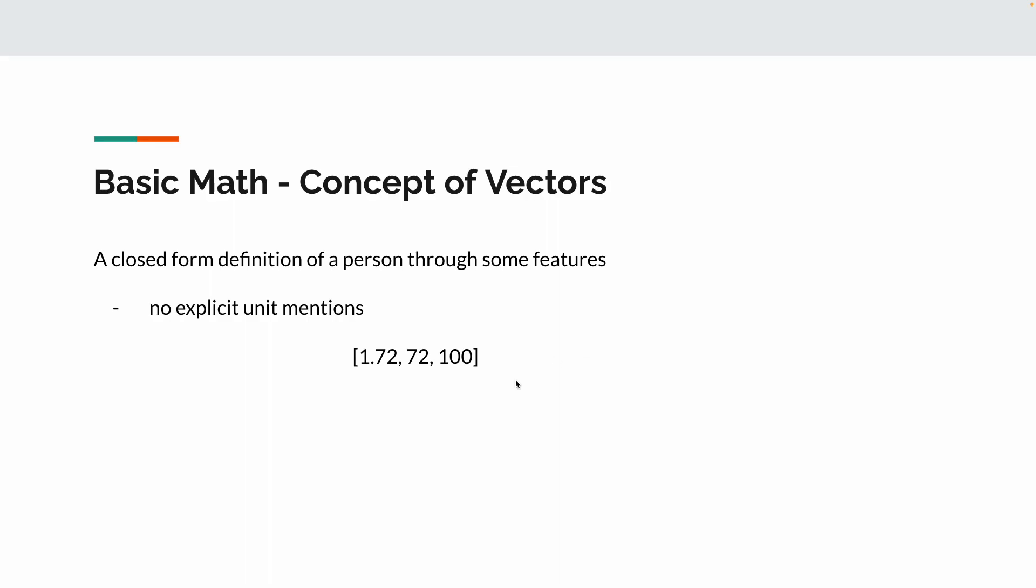This is your first definition, or maybe data science definition of vector. But we have to remove the units. So the same person that we are talking about, his definition through a vector is following this format: this is the height, this is the weight, and this is the salary.